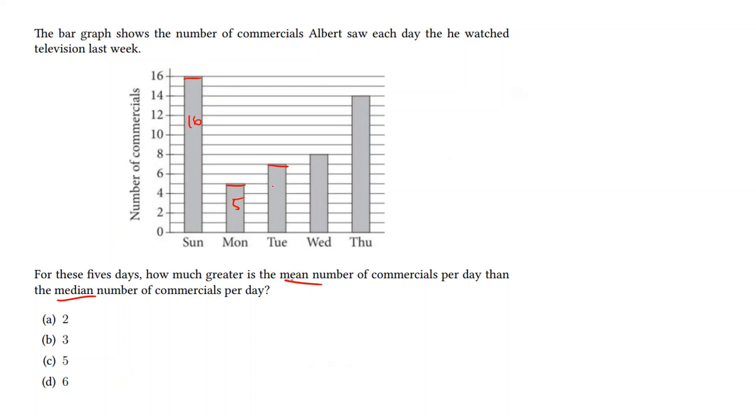This is going to be 5, this is going to be 7, this is 8, and this is 14. So if we add up all of these commercials, we have 16 plus 5 plus 7 plus 8 plus 14, all of this divided by the number of days we're interested in. We have 5 days listed here, so we'll divide by 5. This is 50 over 5, which simplifies to 10, which means our mean is 10.